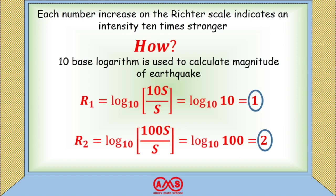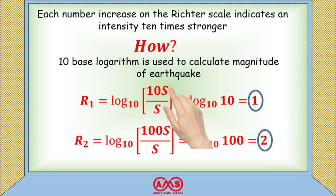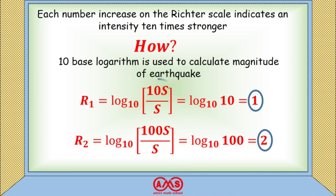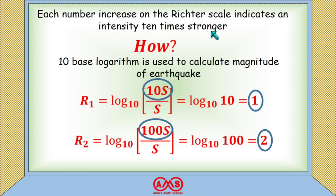One number increase on the Richter scale means the intensity is 10 times stronger — going from 10S to 100S. So each number increase on the Richter scale indicates an intensity 10 times stronger.